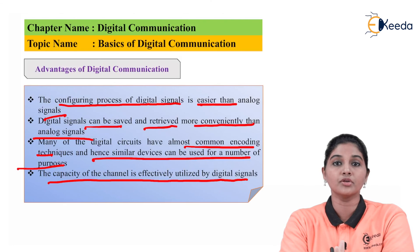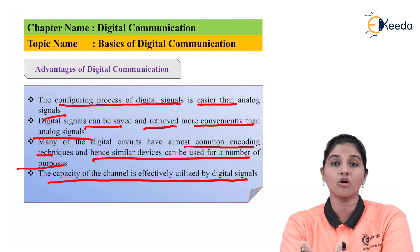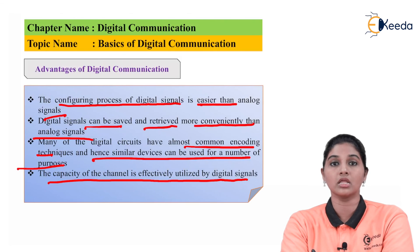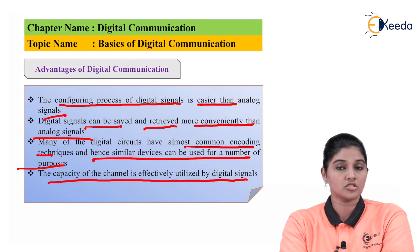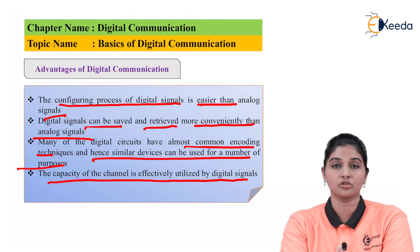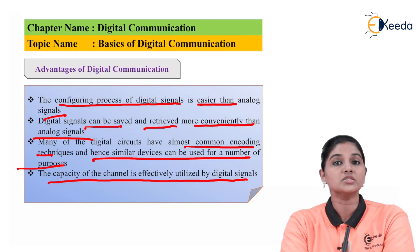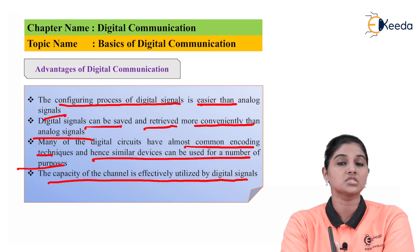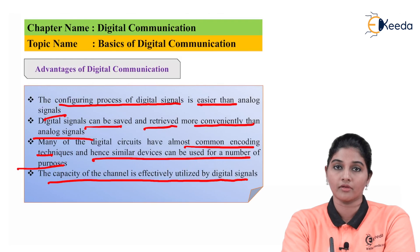From a communication point of view, the digital communication system is the best system compared to analog, because in analog — though we use different modulation techniques and security-providing techniques — the signal continuously varies, which affects the quality of the signal and information. To avoid that, digital systems come into the picture. I hope you understand the basics of digital communication along with its advantages. Thank you very much for watching. Stay tuned to eKIDA. Subscribe eKIDA. Thank you.